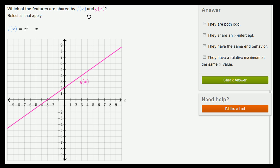Which of the features are shared by f(x) and g(x)? Select all that apply. They give us f(x) as being defined as x³ - x, and they define g(x) essentially with this graph.